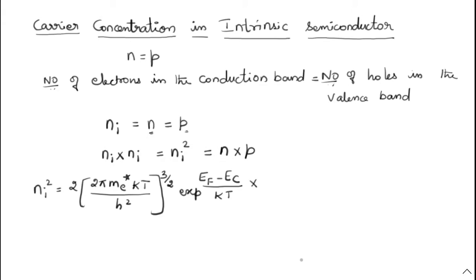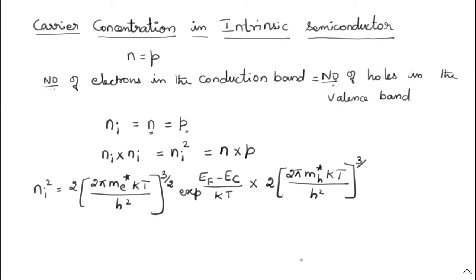And then I am going to write the P value — what is the number of holes in the valency band. That also I am going to write: 2 into (2πM_H* KT divided by H²), whole to the power of 3/2, exponential of (E_V minus E_F) divided by KT. Now you see the first term: 2 here and also 2 here — 2 into 2 becomes 4.